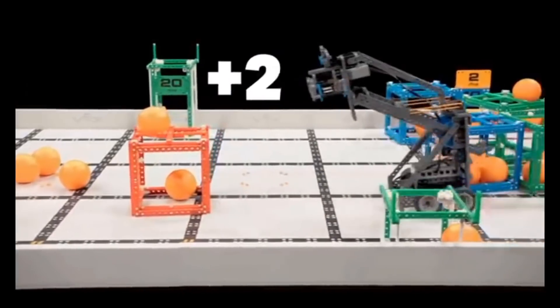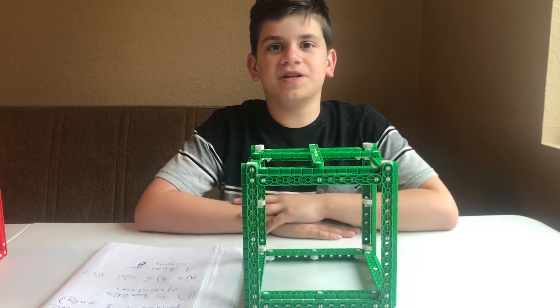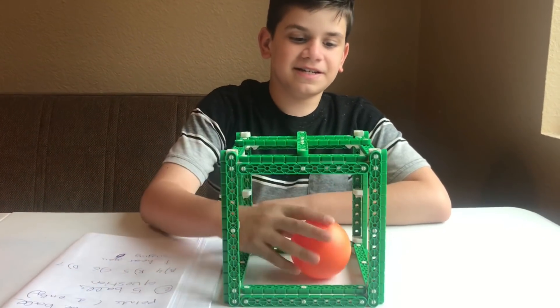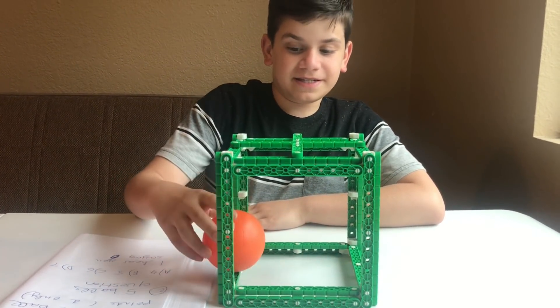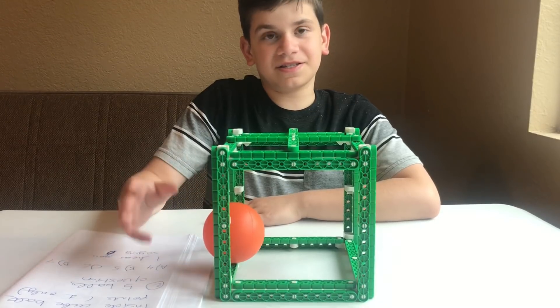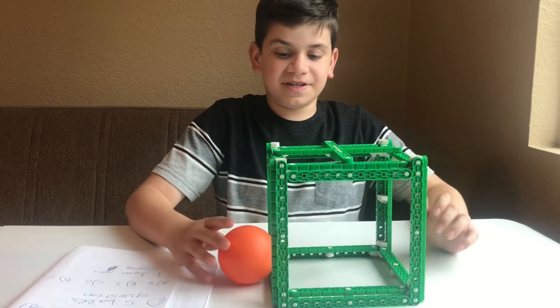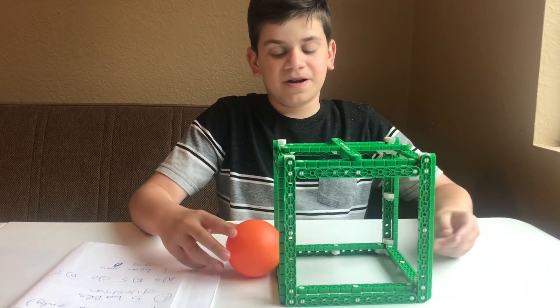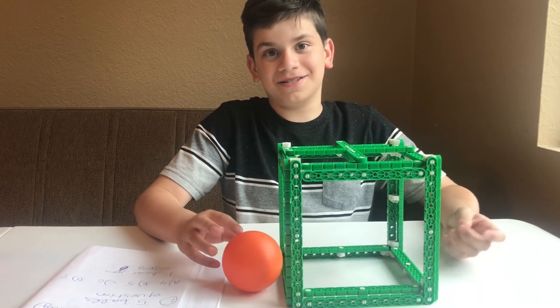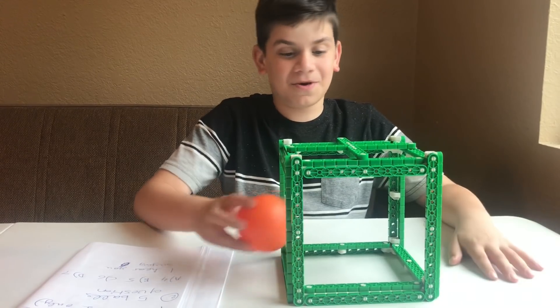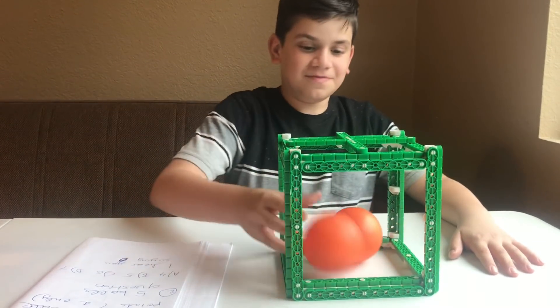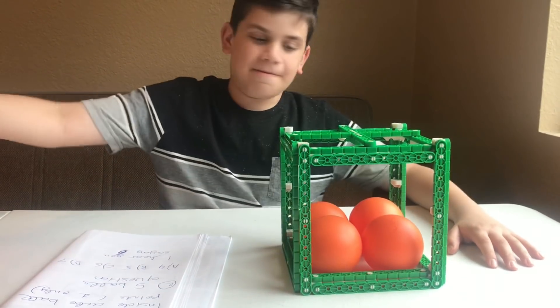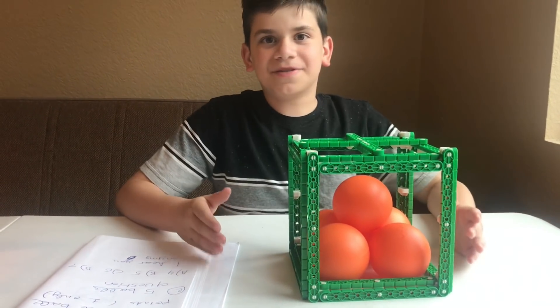I'm going to be talking about inside cube scoring. So this is one point, this is still one point because it is still inside the cube. But this, even though it's touching the cube, it is outside of it, so you can only get zero points from this.